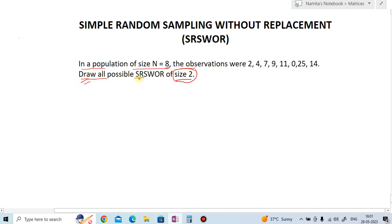So let's solve this example. This example was asked in university examination of class FYBCom for 5 marks. It is very simple to solve. Now we have to draw the simple random sampling without replacement of size 2.